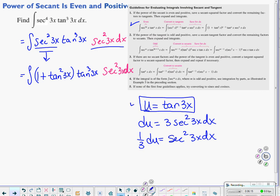I told you I want everything in terms of tangents. So what I'm going to do is distribute. And you're going to think that this is magic. Tangent cubed 3x plus tangent to the 5th 3x gets multiplied by my little reserve, secant squared 3x dx.